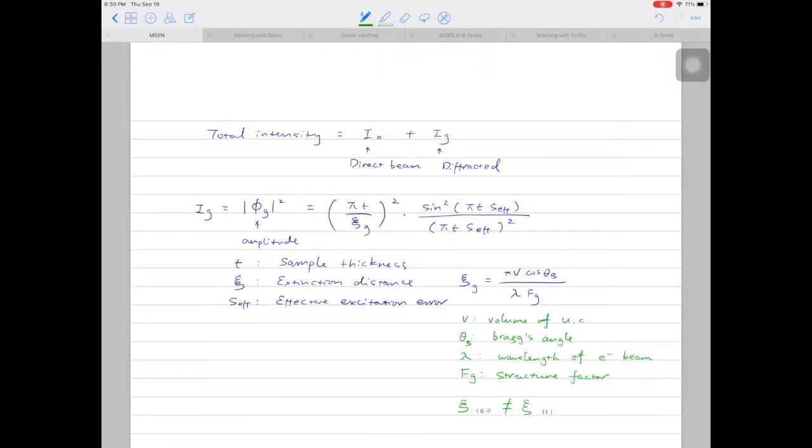There are a few notes about the effective excitation error. First of all, it is never equal to zero. Secondly, if the excitation error is equal to zero, then the effective excitation error is equal to ccg to the power of minus one. If the excitation error is very large, then the S effective is equal to s.